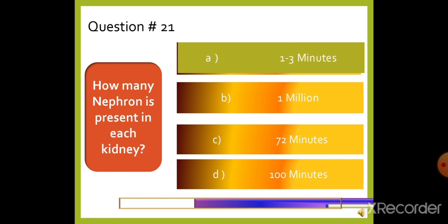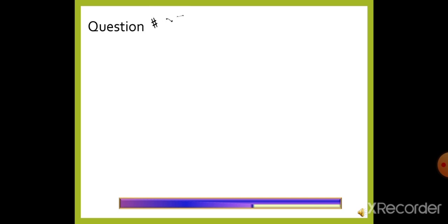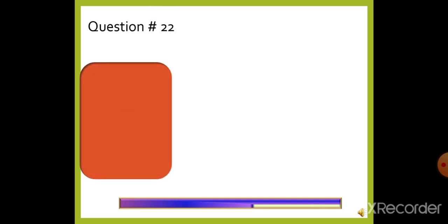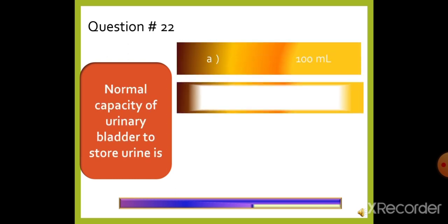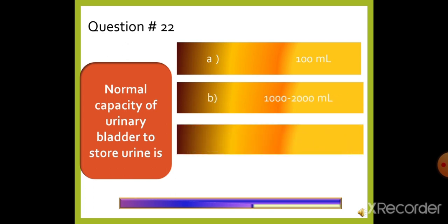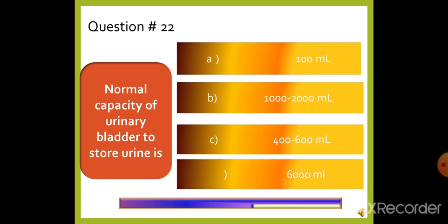Question 22: Normal capacity of the urinary bladder to store urine is — option A: 100 ml, option B: 100 to 2,000 ml, option C: 400 to 600 ml, or option D: 6,000 ml. The right answer is option C, 400 to 600 ml.